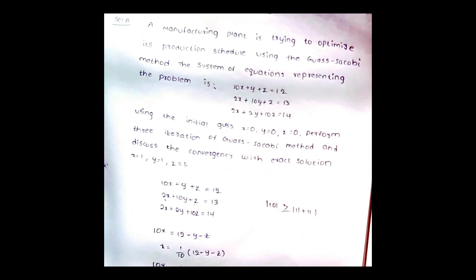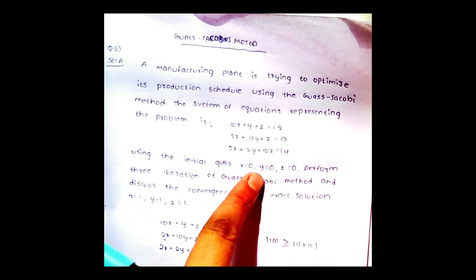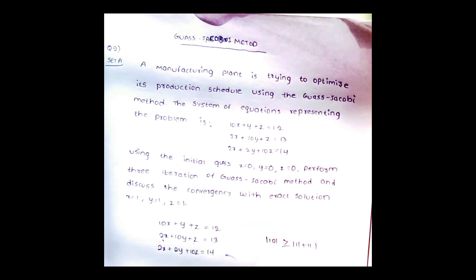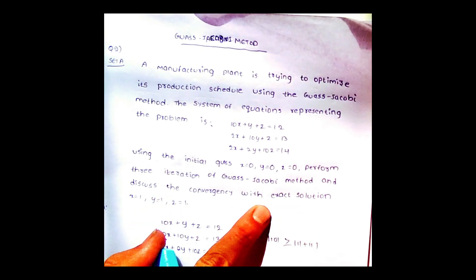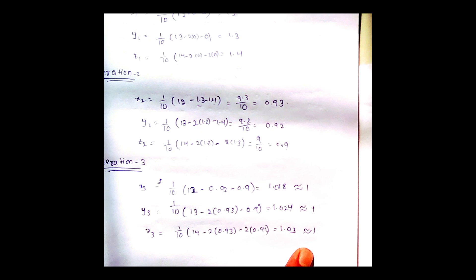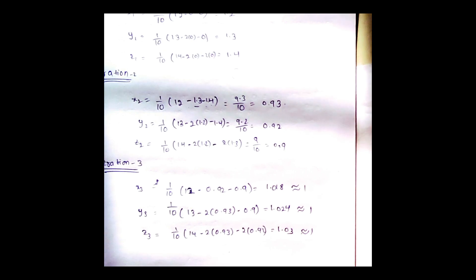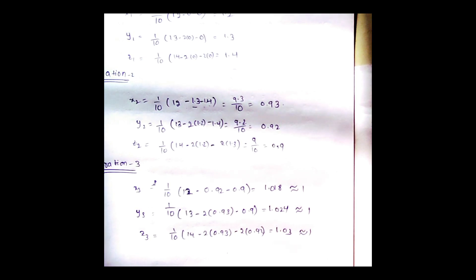We have completed 3 iterations of the Gauss-Jacobi method using initial guess x₀ = y₀ = z₀ = 0 and confirmed convergence toward the exact solution x = 1, y = 1, z = 1. In Gauss-Jacobi, we use the previous iteration's values throughout each iteration step. In the next video, we will discuss the Gauss-Seidel method. The PDF solution is available in the description. Thank you for watching.